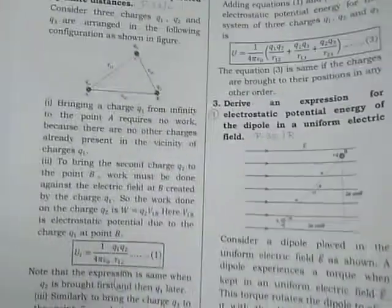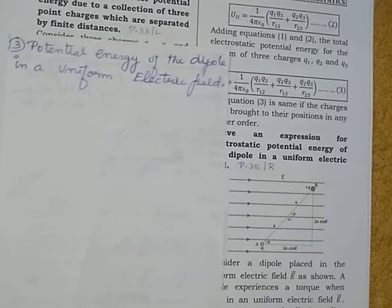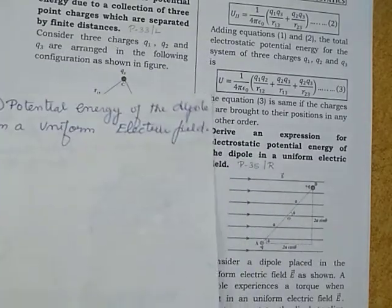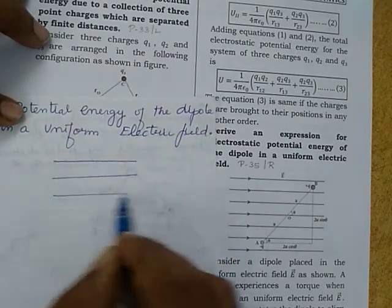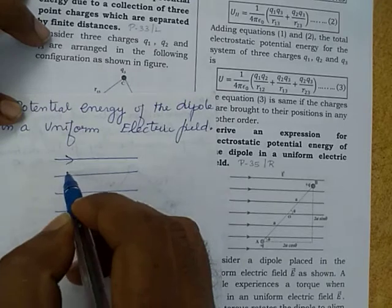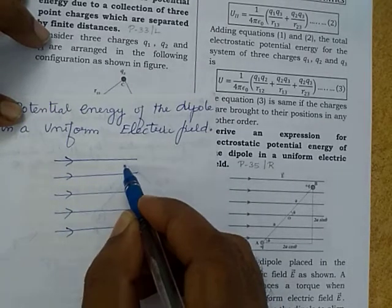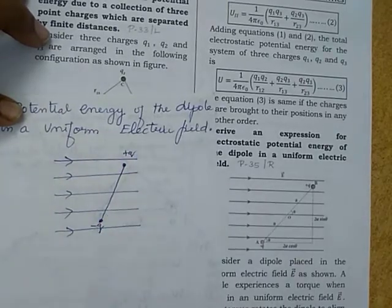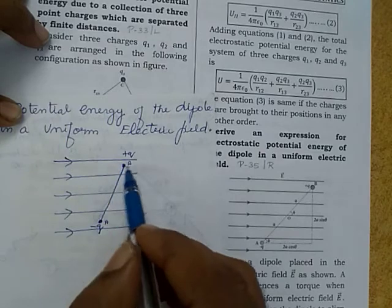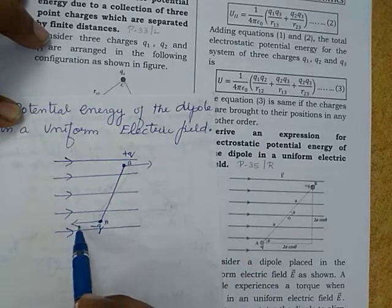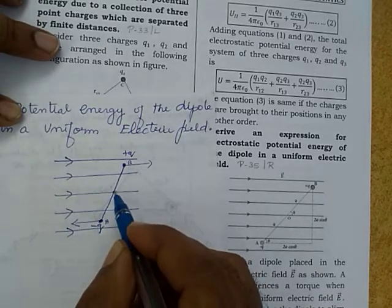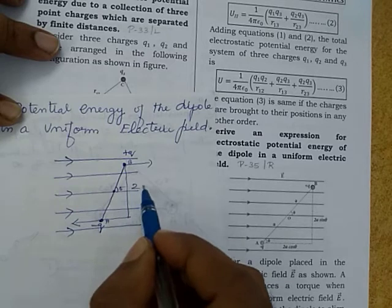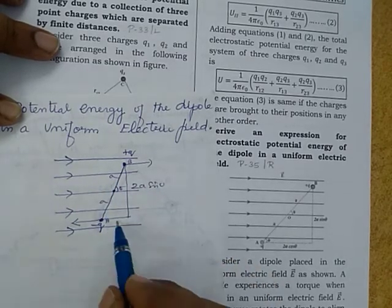Let me review what are the important things needed to answer the question. The question is the potential energy of the dipole in a uniform electric field. For this, we need to draw a uniform electric field first — same direction, same magnitude. In this uniform electric field, I am placing a dipole. We know the dipole has two equal and opposite charges, minus Q and plus Q. Here the position is A, this position is B. The plus charge will experience a force in one direction, the minus charge will experience a force in the opposite direction. Two equal and opposite forces constitute a couple, then it will attain a torque. Due to the torque, it will rotate. This perpendicular distance is 2A sin theta.